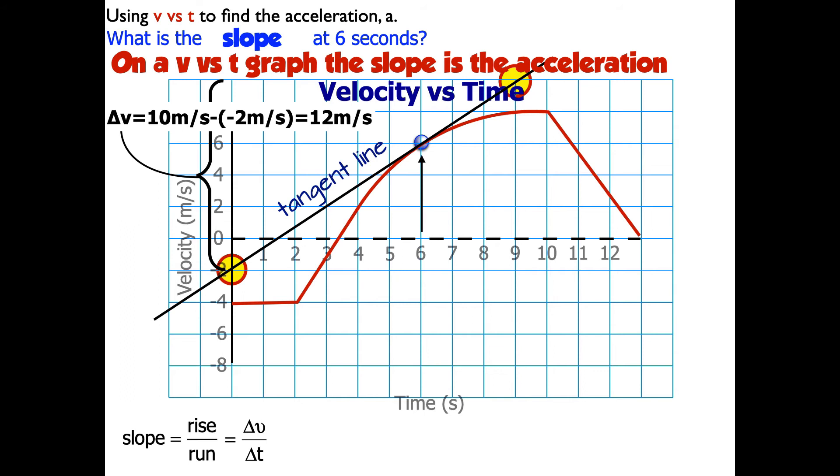Horizontally, that's going to be the horizontal difference. The run is going to be the horizontal difference between these two. So that's going to be nine seconds minus zero seconds, which is nine. So this is going to come out to be 10 minus negative 2 divided by 9. And that's going to be four thirds meters per second squared.